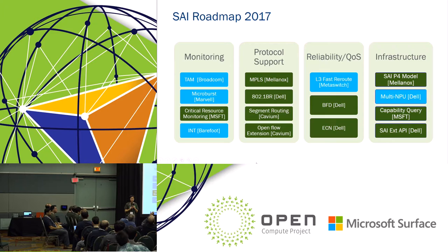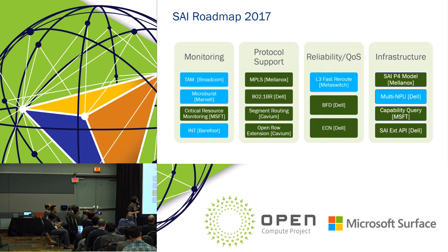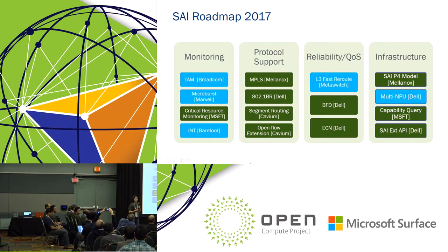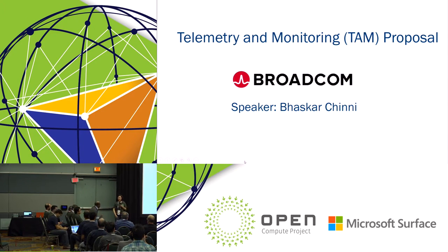MetaSwitch is driving the L3 fast reroute proposal. Dell is bringing BFD and ECN to beef up network reliability. We are also enriching the infrastructure: Manonox is working on a P4 model, Dell will introduce multi-NPU scenarios, Microsoft is proposing capability queries so you can maximize use of hardware capabilities, and Dell is adding SAI extensions. Due to timing limitations, only five of these will come to the stage today. First up is Broadcom — welcome, Baskar.